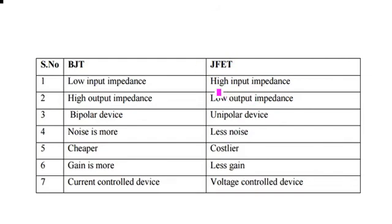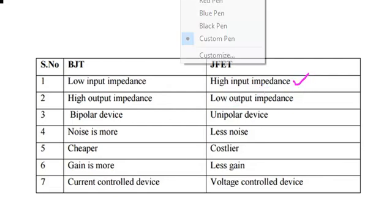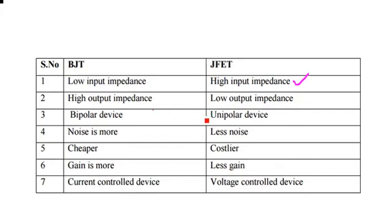J-FET has high input impedance — this is very very important. Next, output impedance is very low. It is a unipolar device, has less noise, is costlier, has less gain, and is a voltage control device. Voltage control device and unipolar device are both very important. All seven of these points are very important.